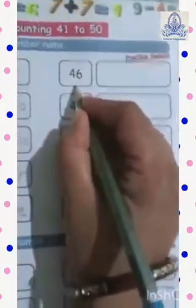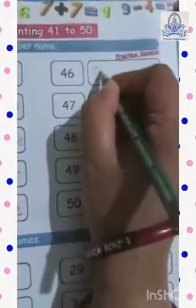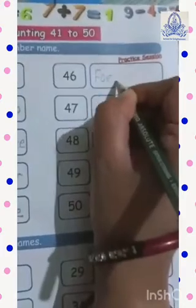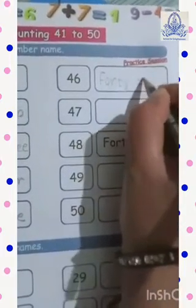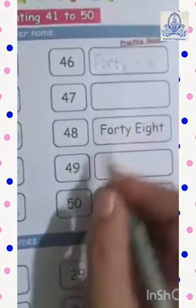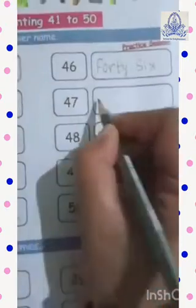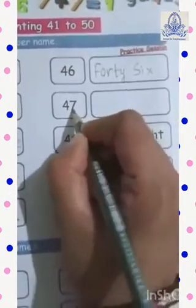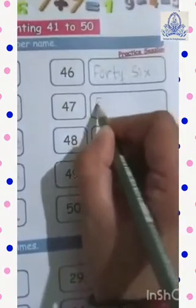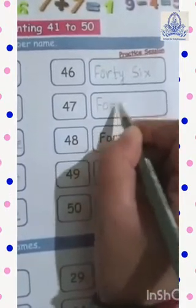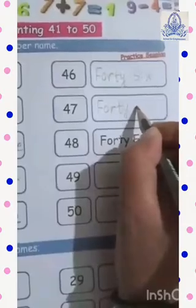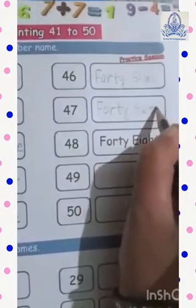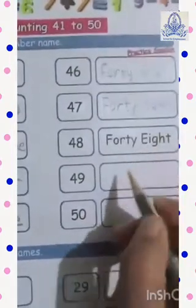Next, 46 — F-O-R-T-Y S-I-X — 46. Forty-seven: F-O-R-T-Y S-E-V-E-N — 47.